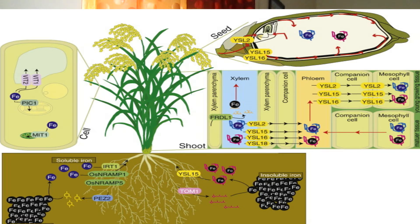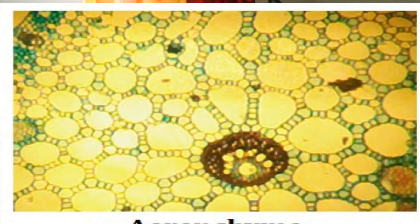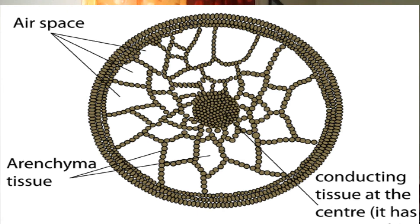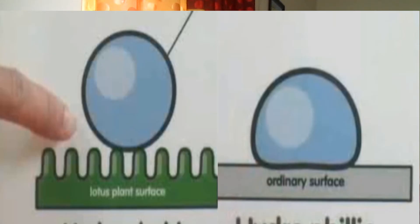The stems of rice plants contain loosely packed cells forming a tissue known as aerenchyma. Gases are able to diffuse through the aerenchyma to other parts of the plant, including those under the water. This is supplemented by air that is trapped in between the ridges of the underwater leaves.